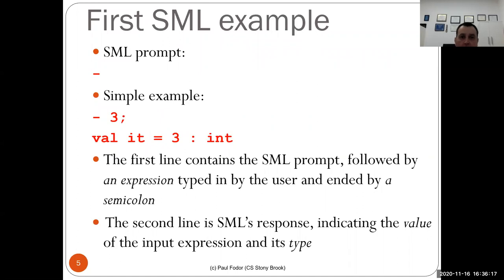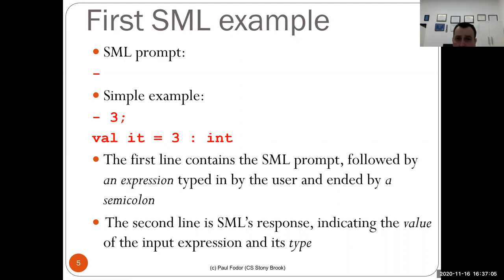As a first example, you can type a value like '3' followed by a semicolon and Enter, and SML will reply that the evaluated value is 3 and it's an integer. The first line contains the SML prompt and the expression typed by the user, ended with a semicolon — every statement in SML ends with a semicolon. The second line is the response: the evaluated value and the type of that expression. SML is a strongly typed language. Everything has a value that is typed. It uses type inference and evaluates everything to a value or to a type.